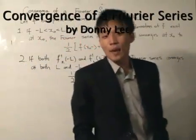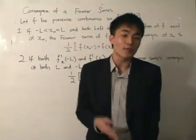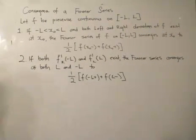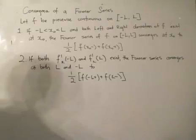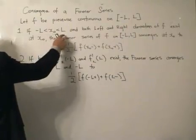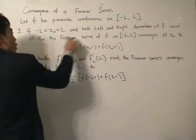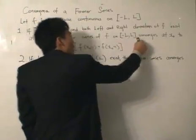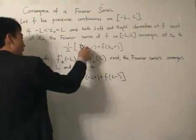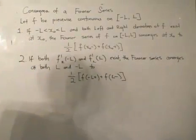Here is convergence of a Fourier series. I hope you watched my previous video on the piecewise continuous function because we need to use that to back up what we're going to say. So there is convergence of a Fourier series, and here's the definition. Let f be piecewise continuous on minus l to l. If x0 is between minus l to l and both the left and right derivatives of f exist, the Fourier series of f on minus l to l converges at x0 to half of the left limit at x0 plus the right limit at x0.